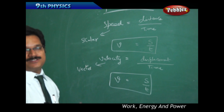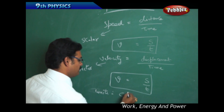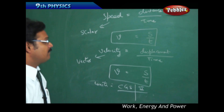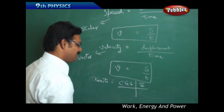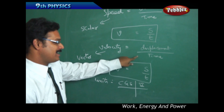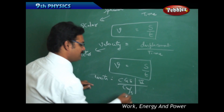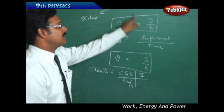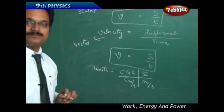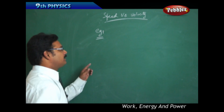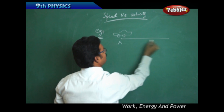Speed and velocity both have the same CGS unit and SI unit. In the CGS system, displacement is in centimeters and time is in seconds, so the unit is centimeters per second. In the SI system, displacement or distance is in meters and time is in seconds, so the SI unit is meters per second.